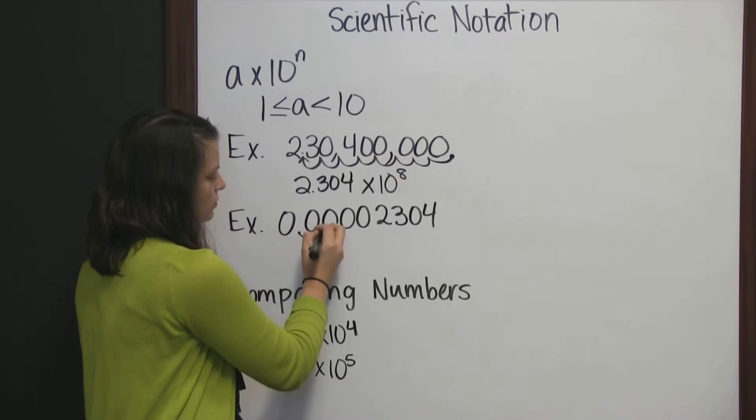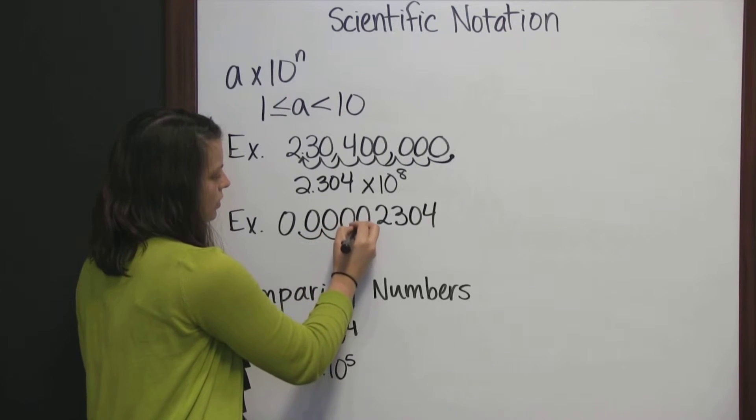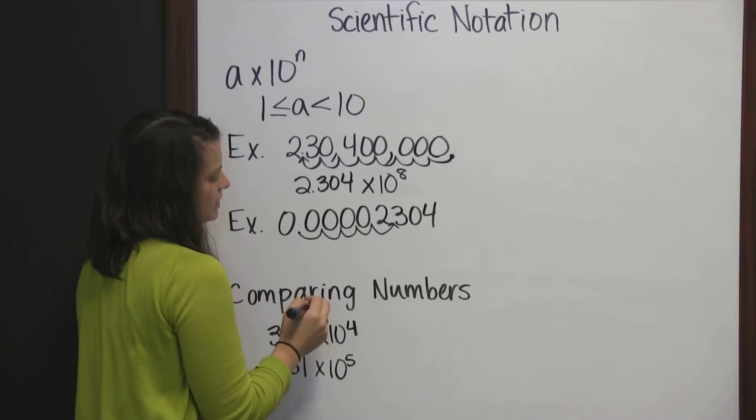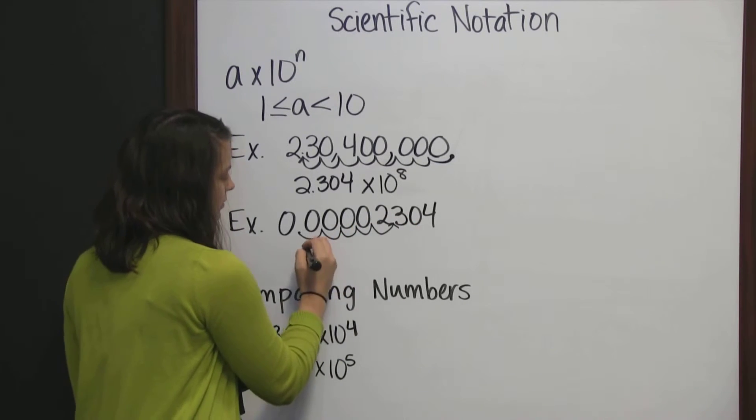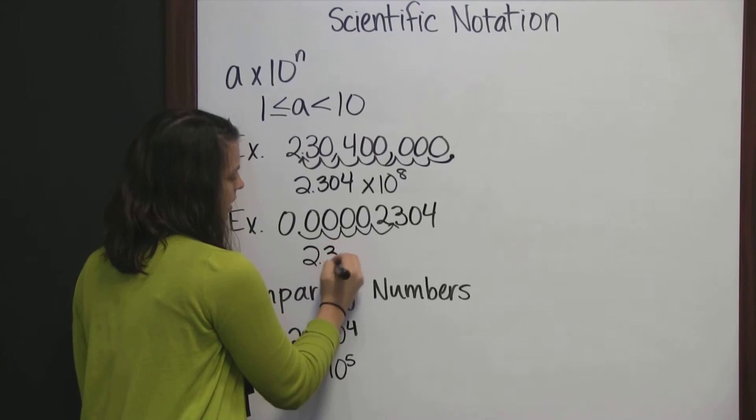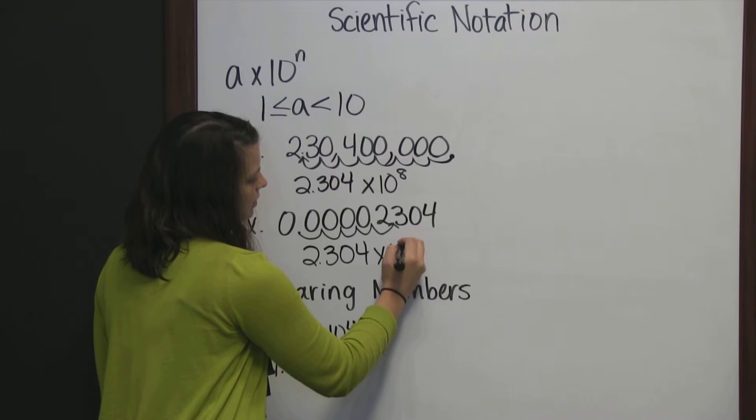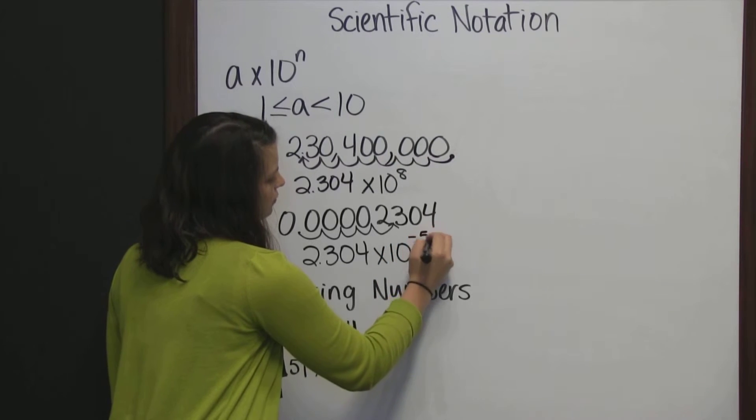which means we need to move our decimal, 1, 2, 3, 4, 5 places to the right. So that it becomes 2.304 times 10 to the negative 5.